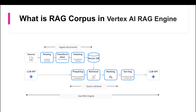So what is RAG corpus in Vertex AI RAG engine? Vertex AI RAG engine is a component of the Vertex AI platform which gives you a retrieval augmented generation option. It is also a data framework for developing context-augmented large language model applications. A common problem with LLMs is that they don't understand your private knowledge — meaning your organization data or enterprise data. They are not trained on your enterprise data.